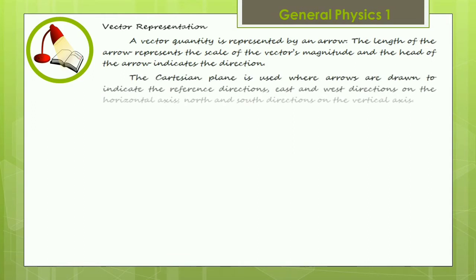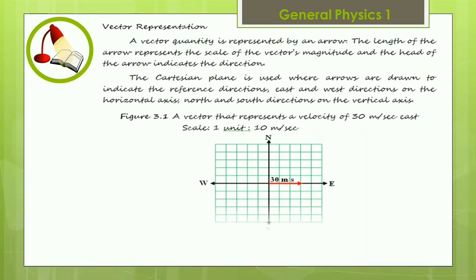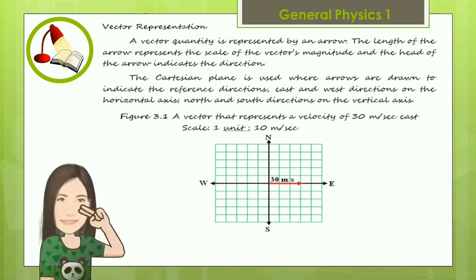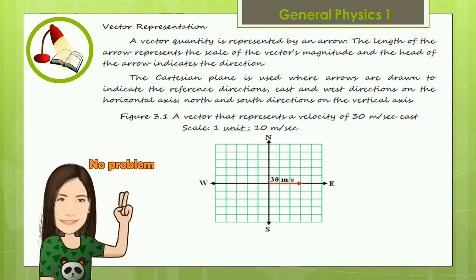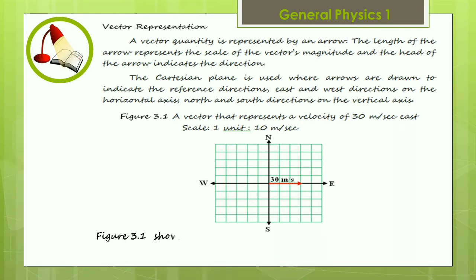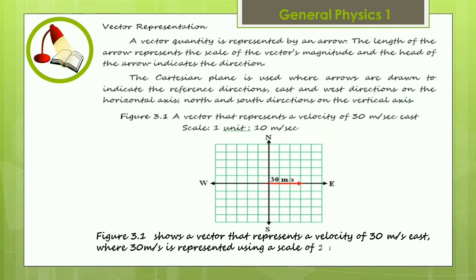A vector quantity is represented by an arrow. The length of the arrow represents the scale of the vector's magnitude, and the head of the arrow indicates the direction. The Cartesian plane is used, where arrows are drawn to indicate the reference directions. East and west directions on the horizontal axis, north and south directions on the vertical axis. Figure 3.1 shows a vector that represents a velocity of 30 meter per second east, where 30 meter per second is represented using a scale of 1 unit equals 10 meter per second, and whose direction is to the right, eastward.